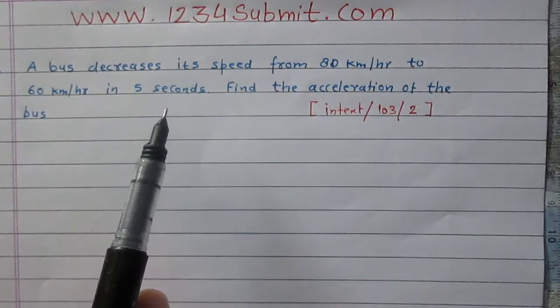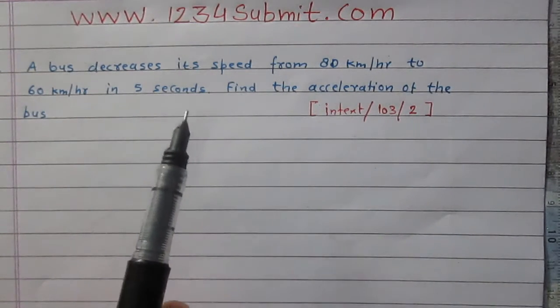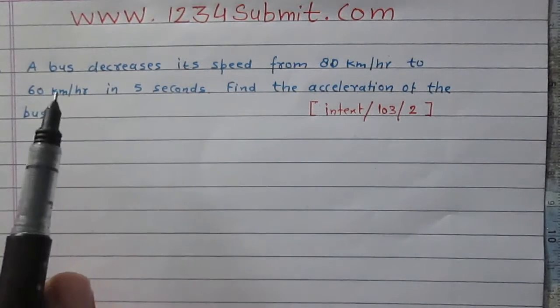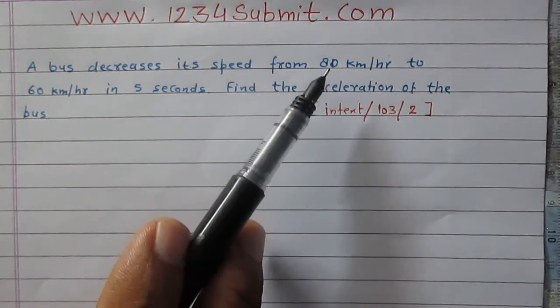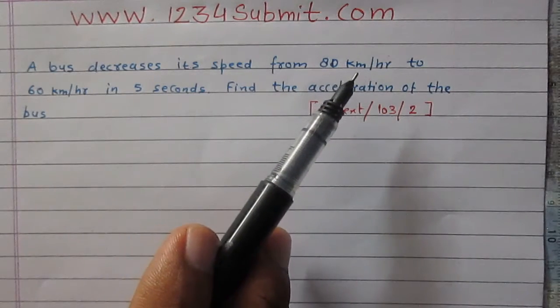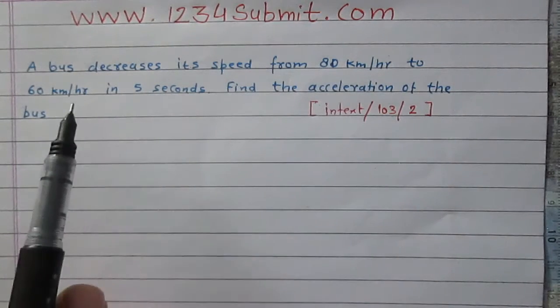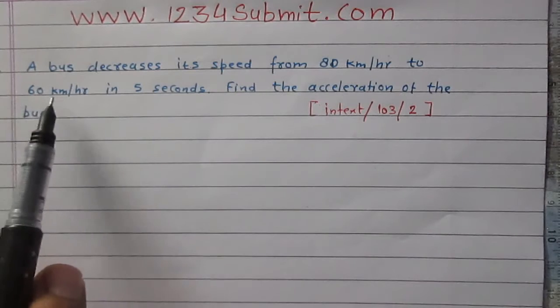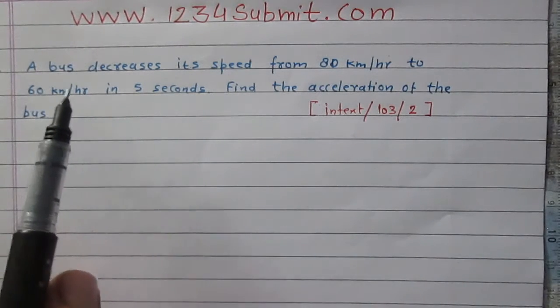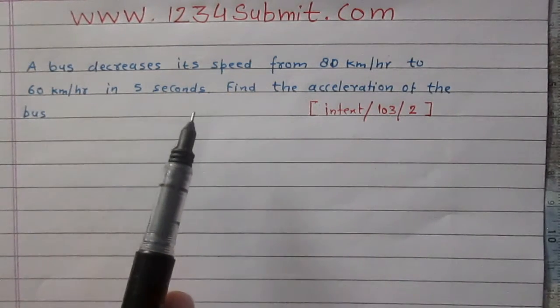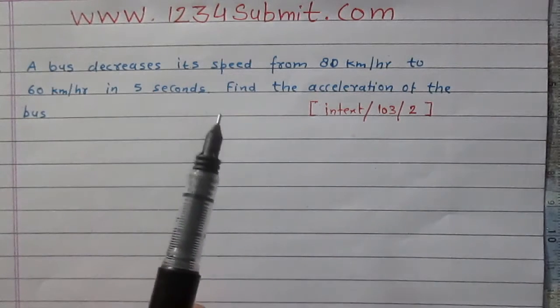The bus is decreasing its speed from 80 km per hour to 60 km per hour. This means the initial speed of the bus is 80 km per hour and final speed is 60 km per hour. Time taken to do so is 5 seconds.